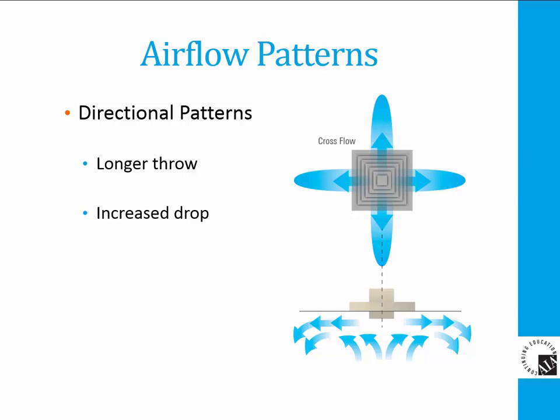The second type of pattern is a cross flow pattern, sometimes called a directional flow pattern. With a cross flow or directional flow air pattern, air is discharged with longer throw in individual sides of the diffuser. The illustration shows a four-way discharge, but it could be three-way, two-way, or one-way as well. With less room air induced into the air pattern, the jet travels a longer distance to a given terminal velocity.